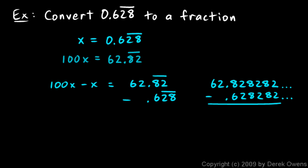And now look, they're lined up neatly. You need to write this with the columns lined up neatly. You can see there that this 28282, and this 28282, and so on, those are all going to cancel out when we actually do the subtraction. And so we just have 62.8 minus 0.6, and that equals 62.2. So, on the left side over here, when I do this subtraction, I get 99x equals 62.2.